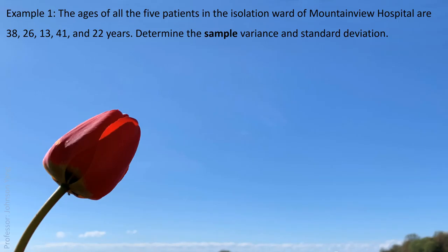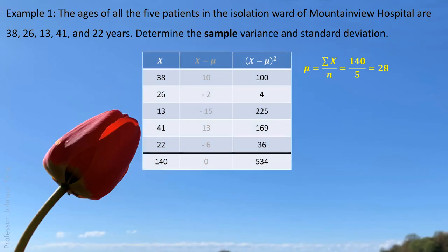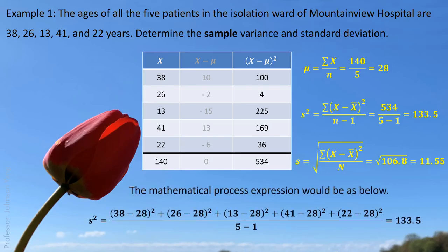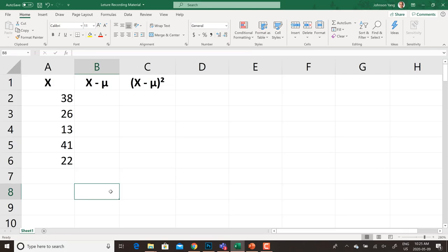Again, we use the same example and same data. Earlier we had five patients' ages. If we treat them as a sample — in that hospital we have more than five patients, but now we only collected these five patients' ages, so we treat them as a sample. We have the same average as before. The only difference is we divide by four instead of five — that is five minus one. So we have sample variance 133.5, and sample standard deviation 11.55.